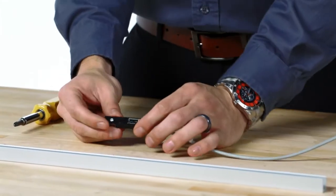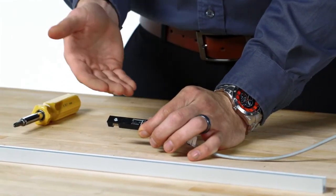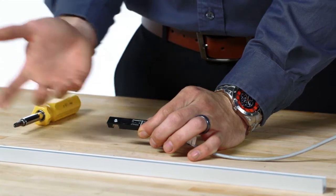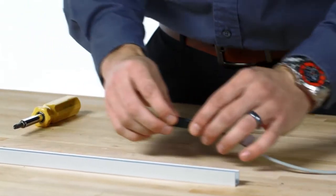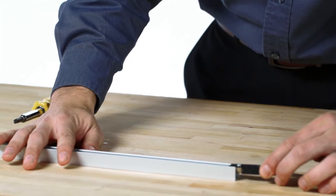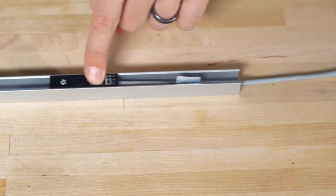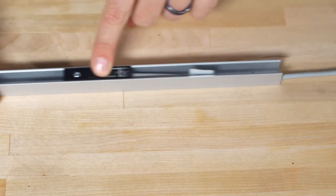So this is our Thompson limit switch and you can have it either normally closed or normally open. To install it on the track, you can simply slide it in through here and you can adjust as necessary where you want it to mount along the linear unit.